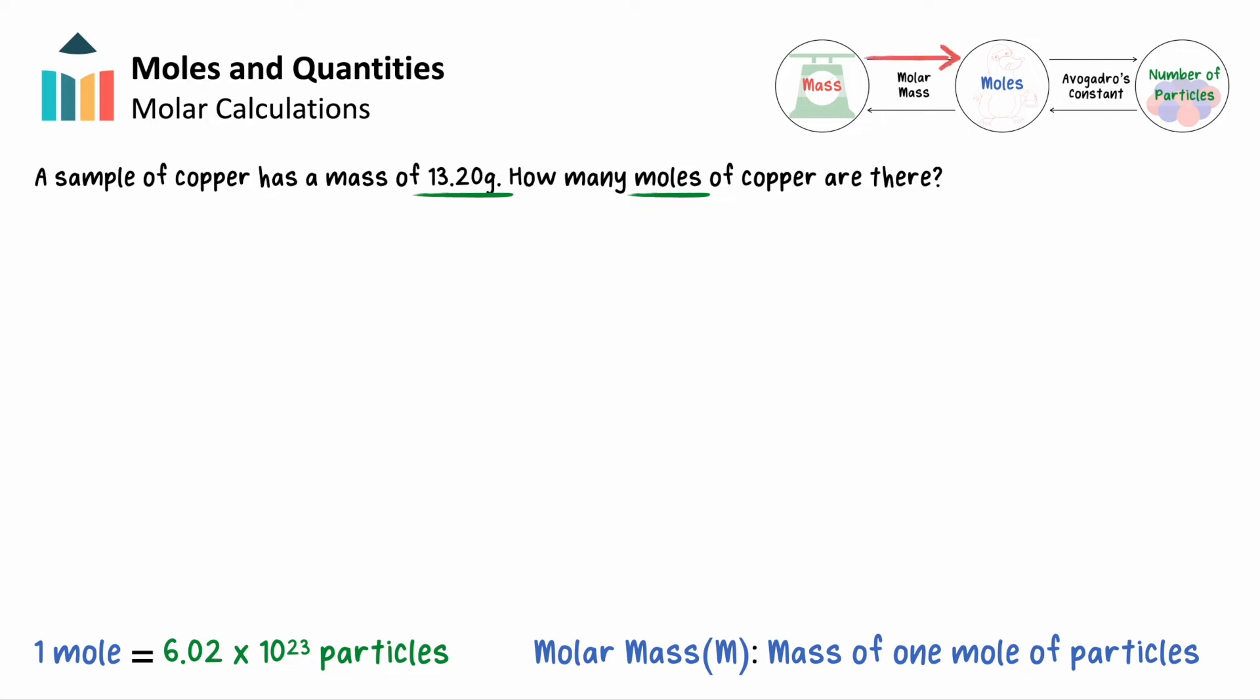Molar mass, remember, comes from the periodic table. For copper, its molar mass equals 63.55 grams per mole, meaning that 1 mole of copper weighs 63.55 grams.